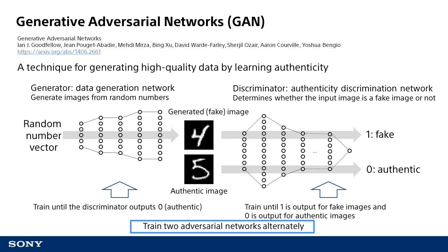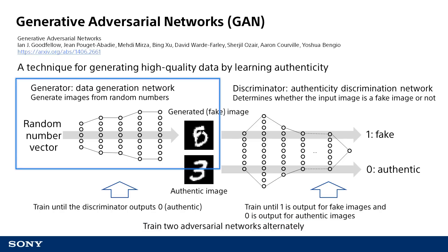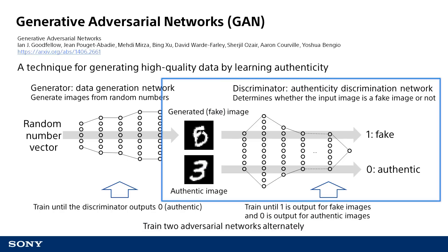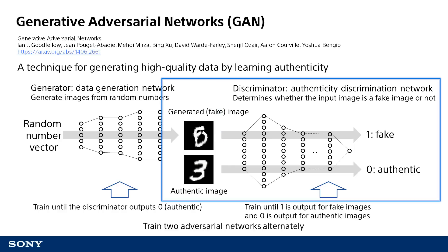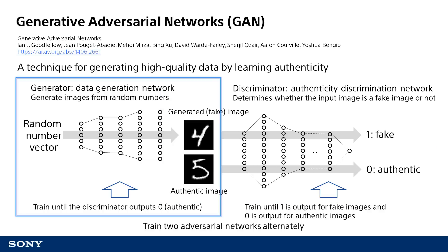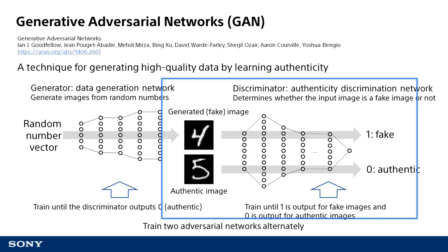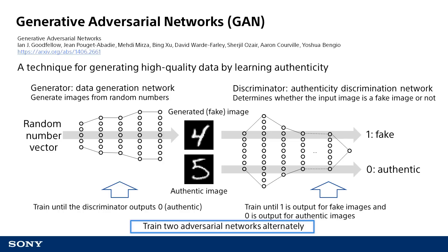It might be easier to think of this from a different perspective — with the generator being someone who makes forgeries of famous paintings and the discriminator being an appraiser who discovers forgeries. As the imposter tries to deceive the appraiser, the appraiser continues to get better at identifying forgeries. As a result of this process continuing again and again, the imposter produces forgeries that are nearly indiscernible from the real thing, and the appraiser is able to discern extremely high-quality forgeries. This is essentially what is happening with the GAN training process.